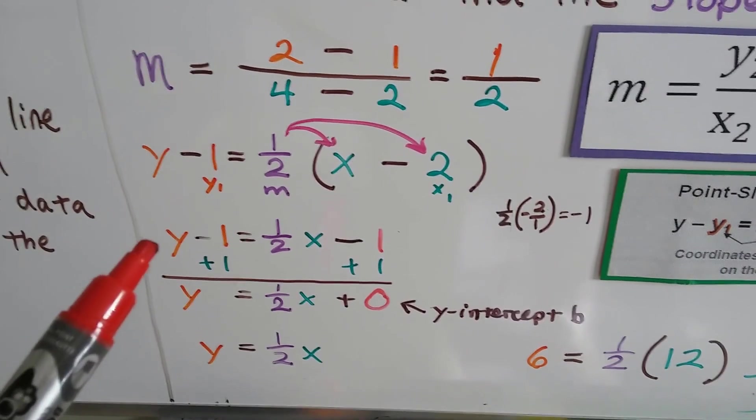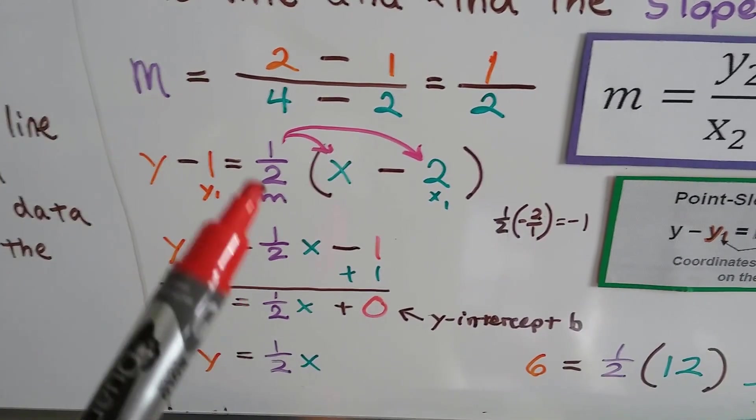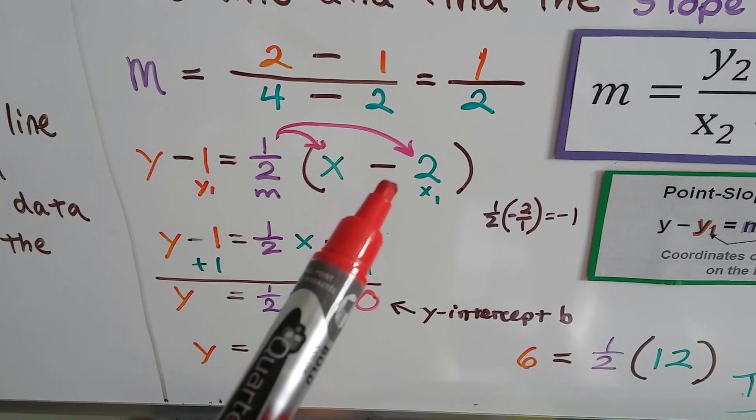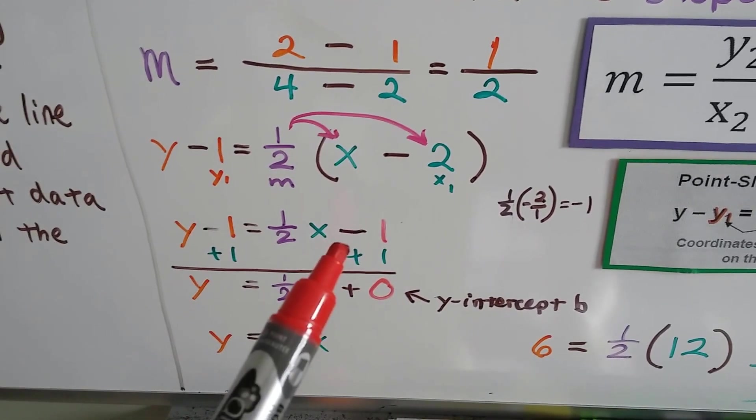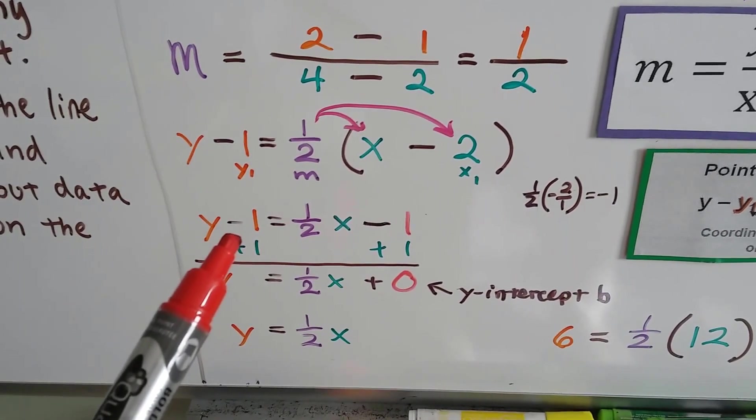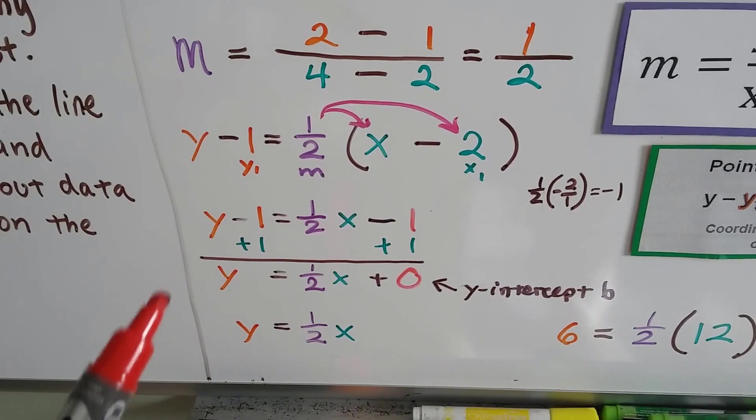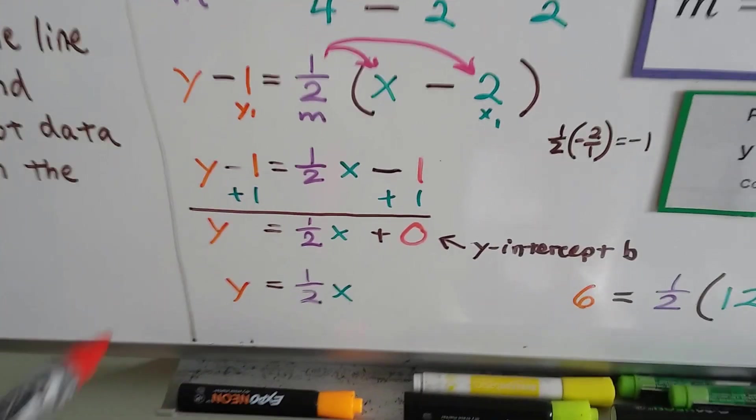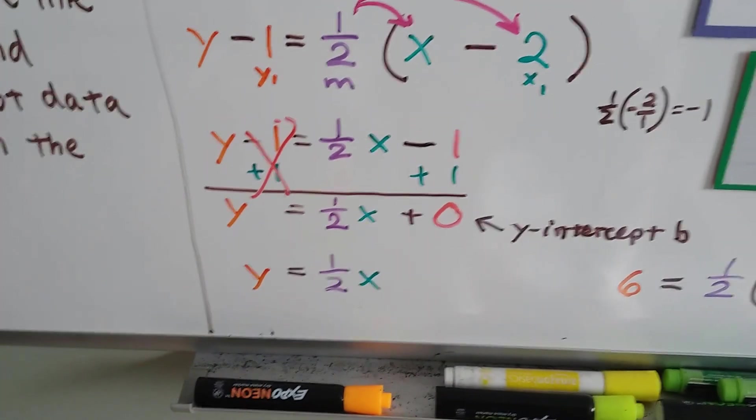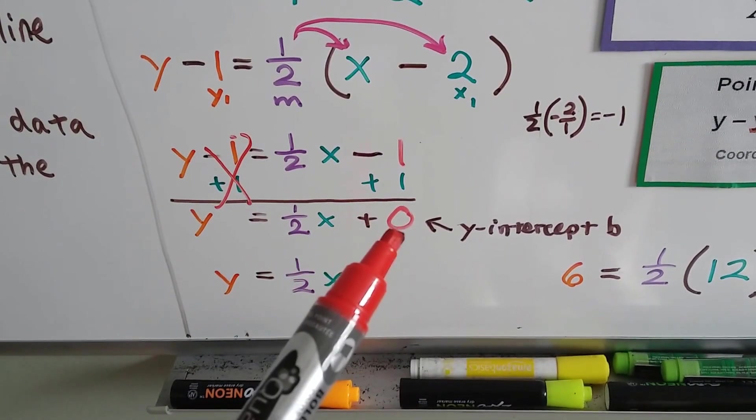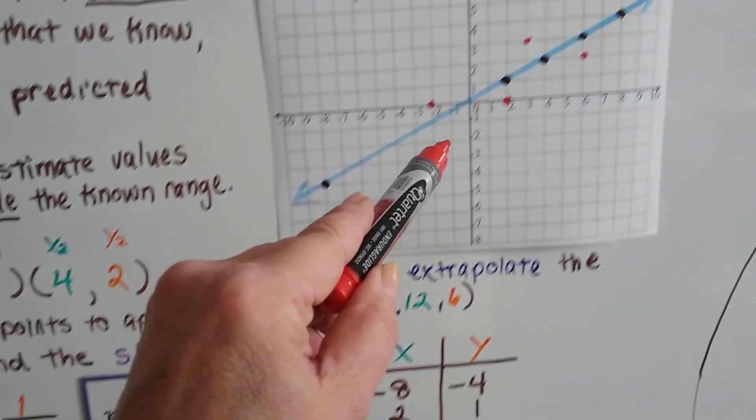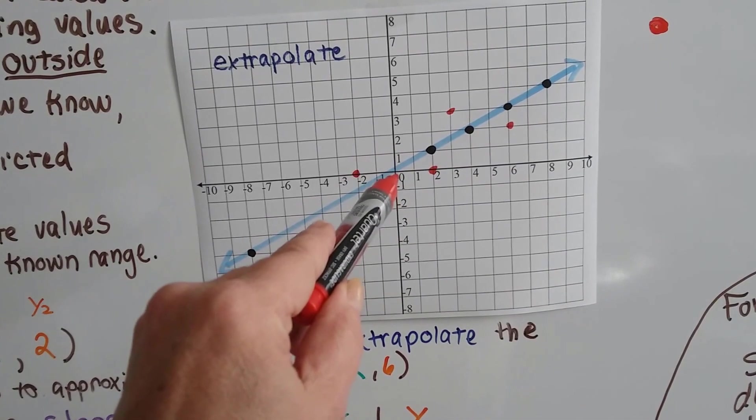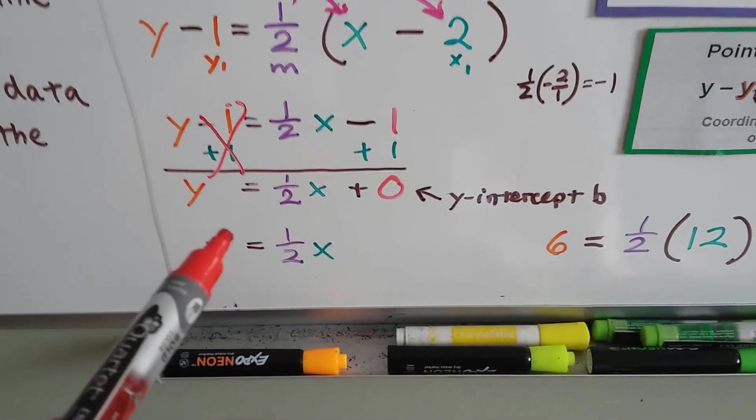So now that we've done this and we've written it in point-slope form, we can use distributive property to solve this. And we get y minus 1 is equal to a half times x, and then a half times a negative 2, well, that gives us a negative 1. The positive half times a negative 2 gives us a negative 1. Now we need to get rid of this negative 1 next to the y, so the y can be isolated by itself, so we can solve for y. So we add a positive 1 to each side, and that creates a zero pair here, doesn't it? And that eliminates that one. And now we have y equals half x plus zero, because a negative 1, positive 1. So our y-intercept b should be at a zero. And you know what? The line does intercept the y line at the zero, at the origin, right there.